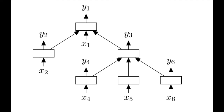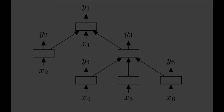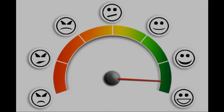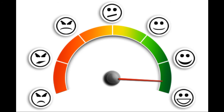Lastly, you'll learn about recursive neural networks, which finally help us solve the problem of negation in sentiment analysis. Recursive neural networks exploit the fact that sentences have a tree structure, and we can finally get away from naively using bag of words. Thanks for listening and I'll see you in class.